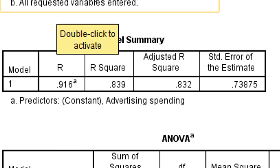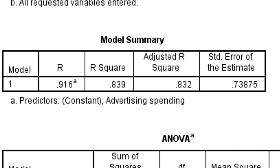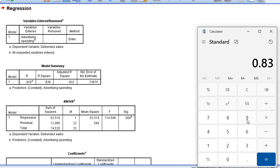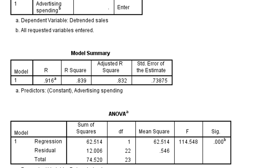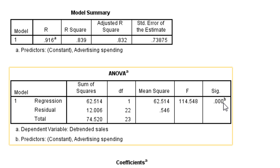R² = 0.839, which means advertising spending has explained 0.839 of the change in the dependent variable, sales. Multiplying by 100: 83.9% of the variation in sales is caused by advertising spending, and 16.1% is unexplained variation — there may be many other factors affecting sales. Next we see the ANOVA table: the F-ratio is statistically significant (p < 0.05), which means our model and equation are statistically significant.